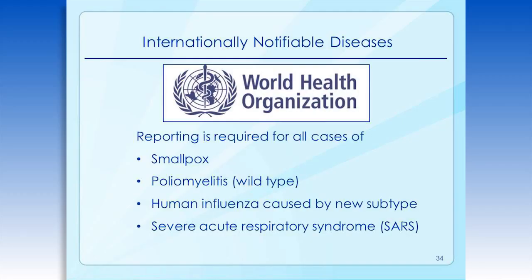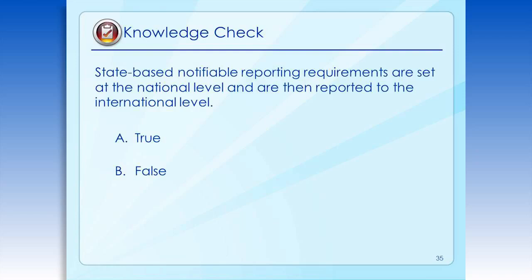From an international perspective, the World Health Organization, or WHO, is the UN agency that coordinates international health activities and helps governments improve health services. International reportable conditions include smallpox, polio, wild-type polio infections, human influenza caused by new subtypes, and severe acute respiratory syndrome, or SARS. Another knowledge check: state-based notifiable reporting requirements are set at the national level and then reported at the international level — is this true or false? The answer is false.